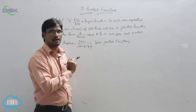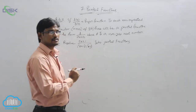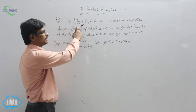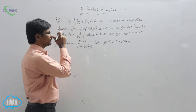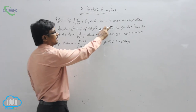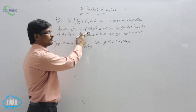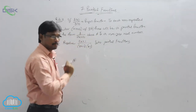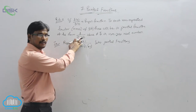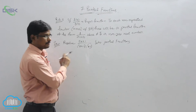In partial fractions we have different methods. The first method is when f(x)/g(x) is a proper fraction. For each non-repeated linear factor (ax + b) of g(x), there will be a partial fraction of the form A/(ax + b). Now we will see one problem.